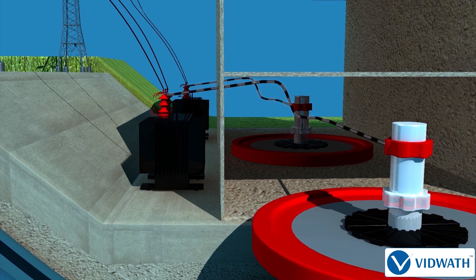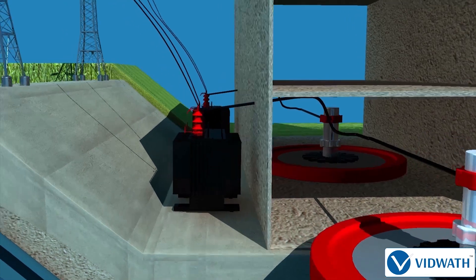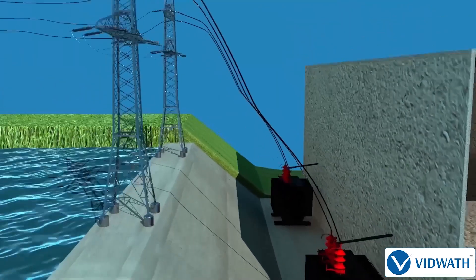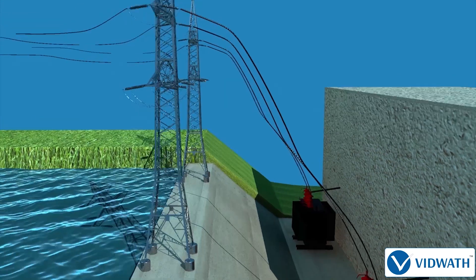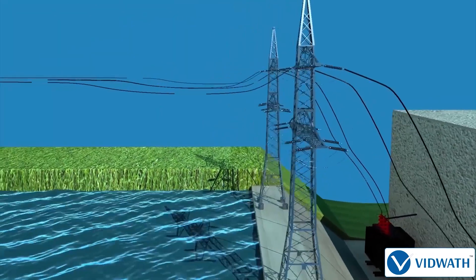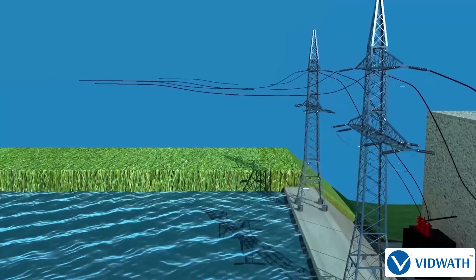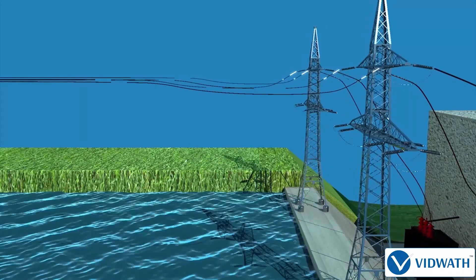In this way, the kinetic energy of flowing water is used to rotate the turbine, and the rotational kinetic energy is converted into electrical energy.